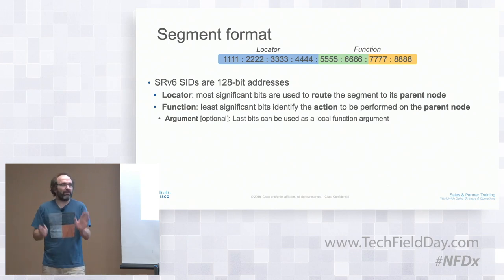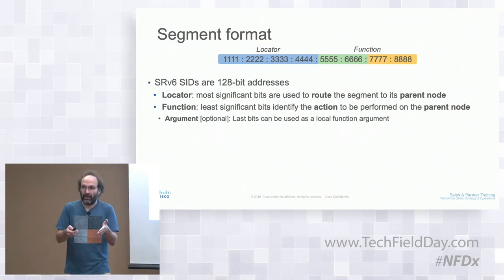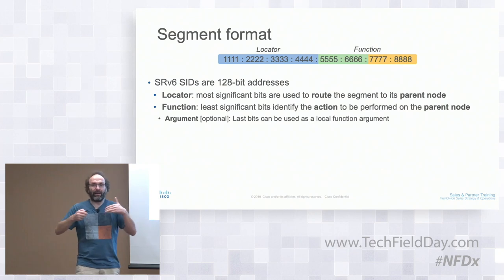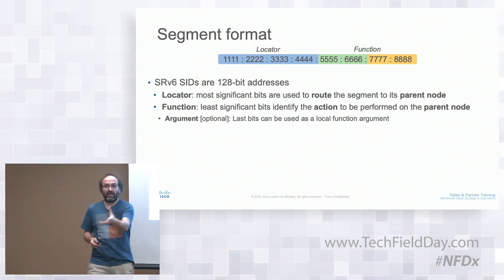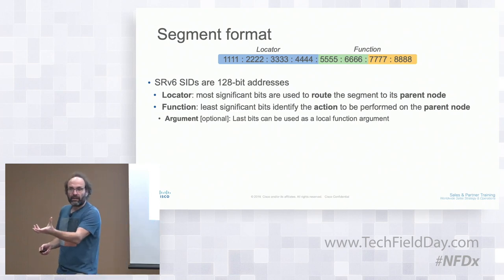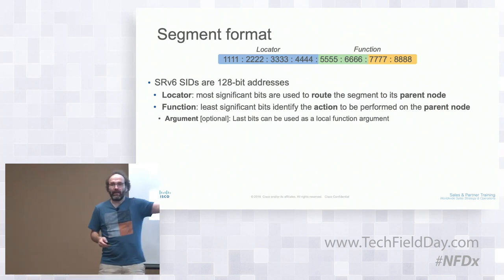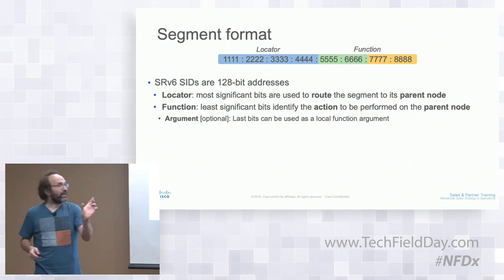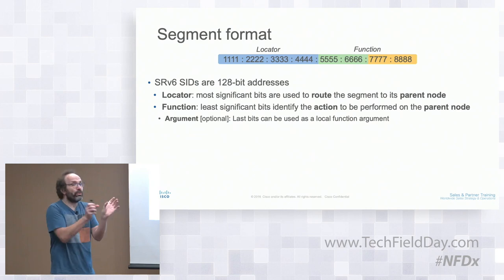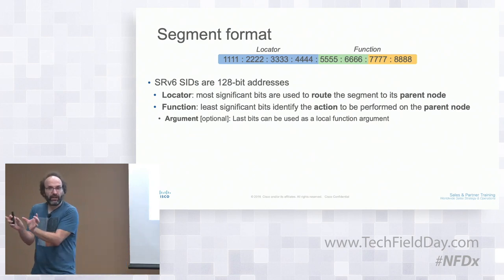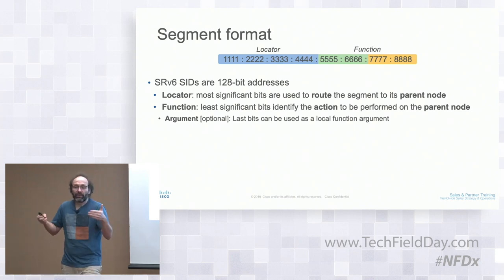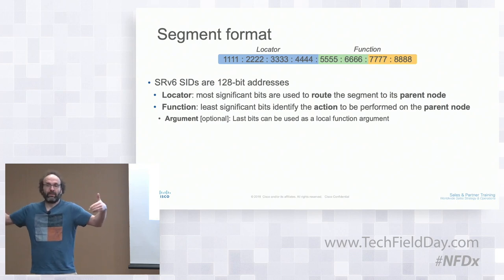The network admin defines the function and how the locator is structured. The locator is advertised to get all packets to the right device. Arguments can specify storage location, video stream start time, or encoding. There will be more and more applications of these functions over time.